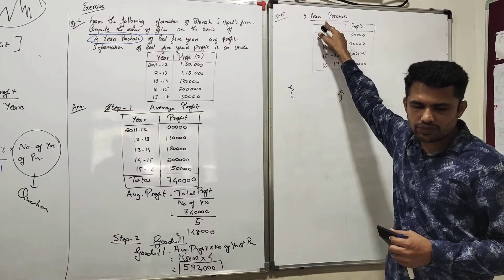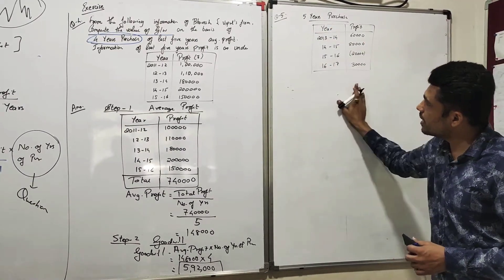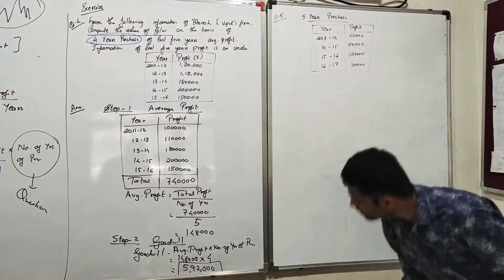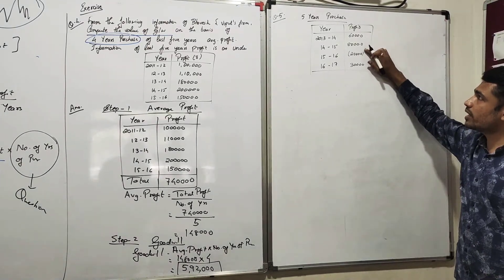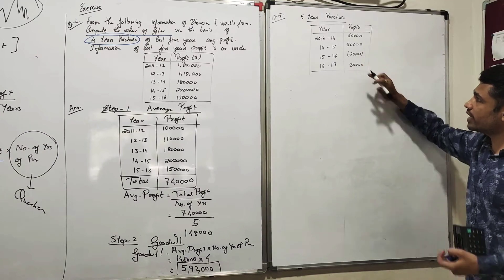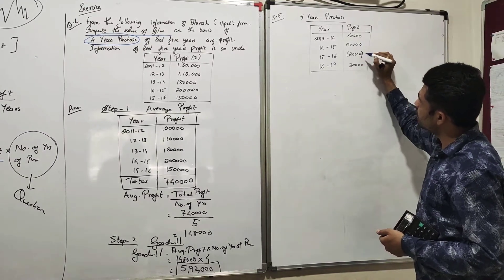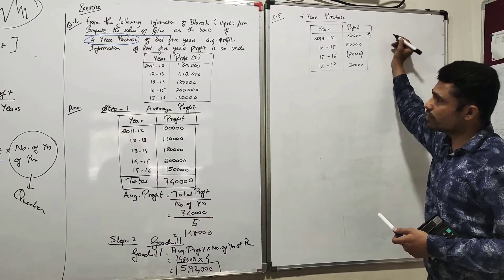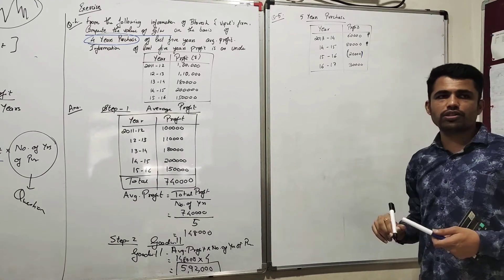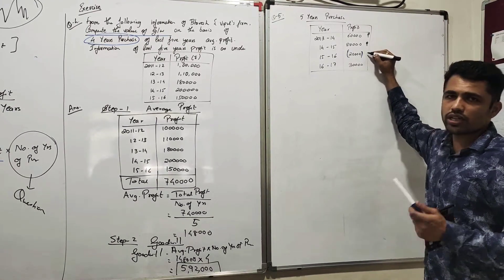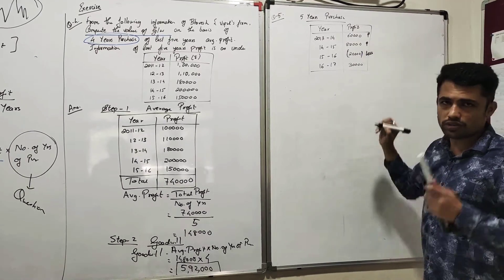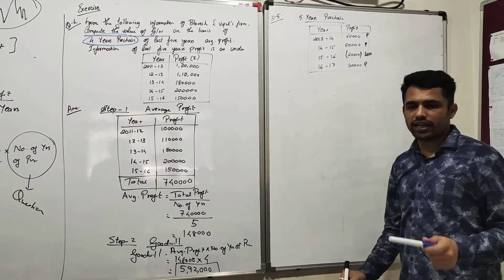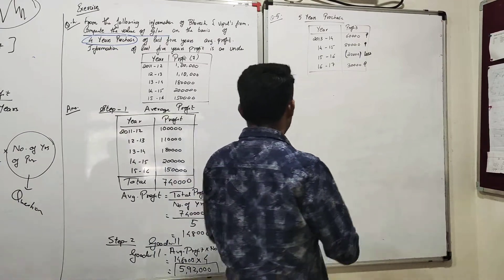Five years purchase of last four years average profit. The details of the profits are: Year 2013-14: sixty thousand; 2014-15: eighty thousand; 2015-16: twenty thousand in bracket, meaning it is a loss; and 2016-17: thirty thousand, which is positive, meaning it is profit. We are supposed to find out the value of goodwill, and we will start with Step One.